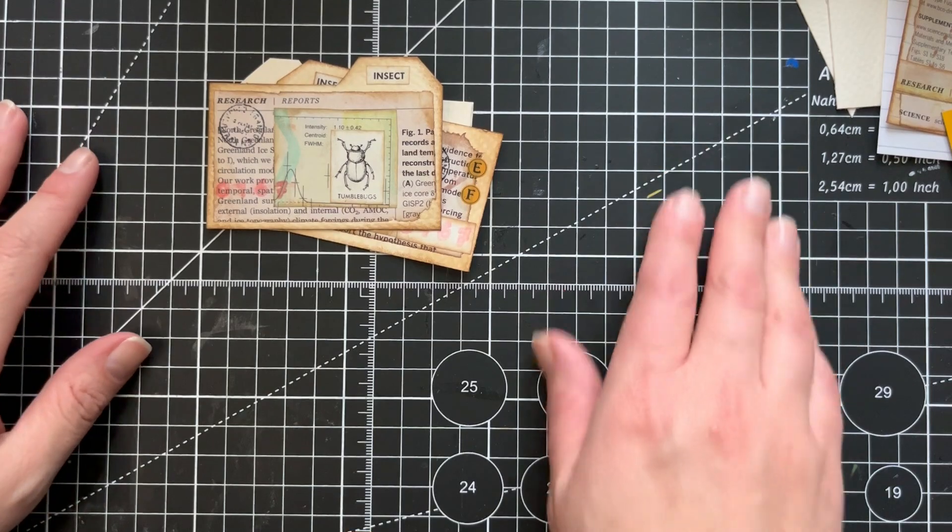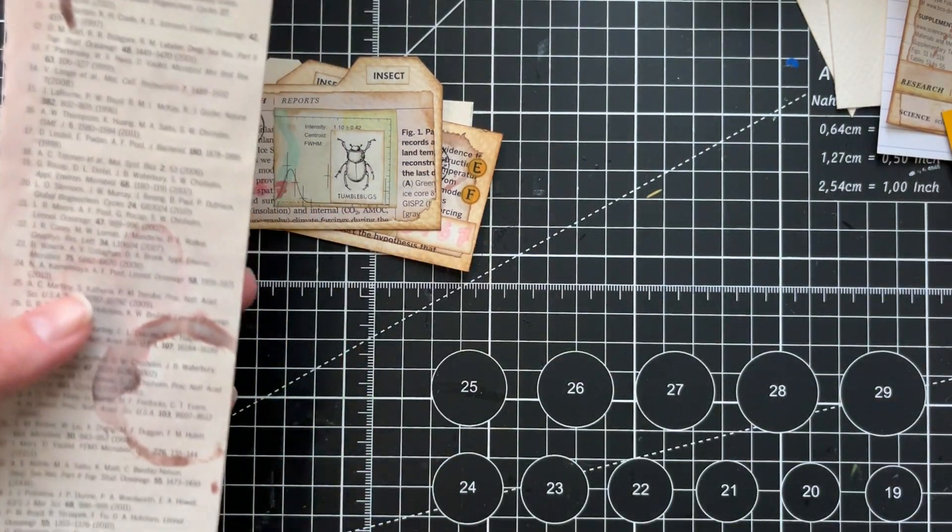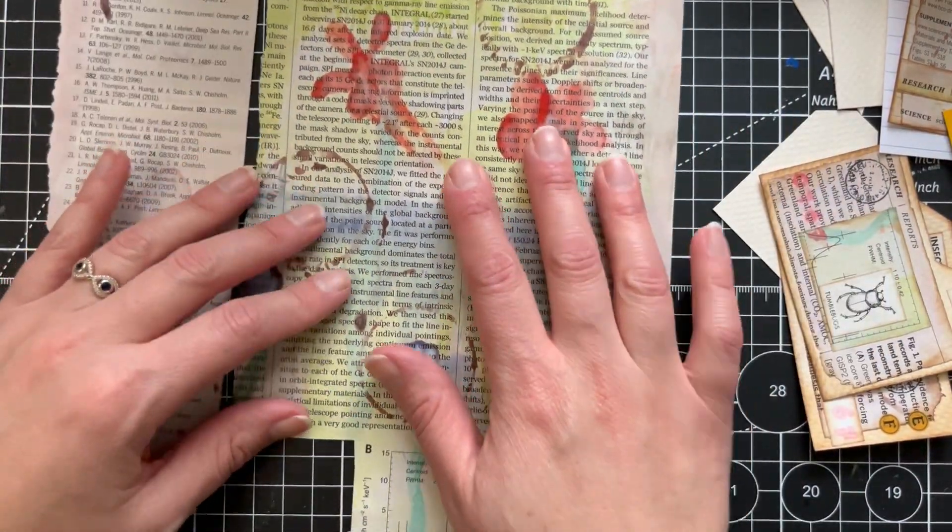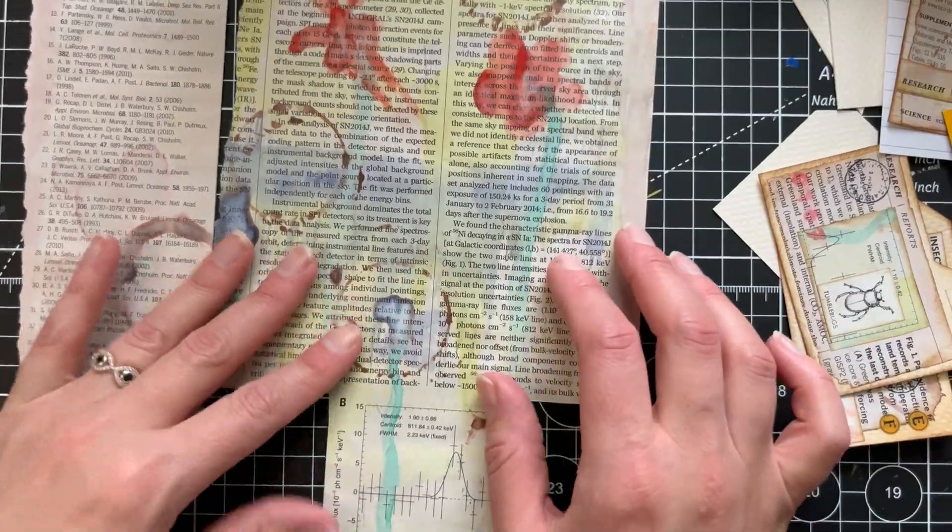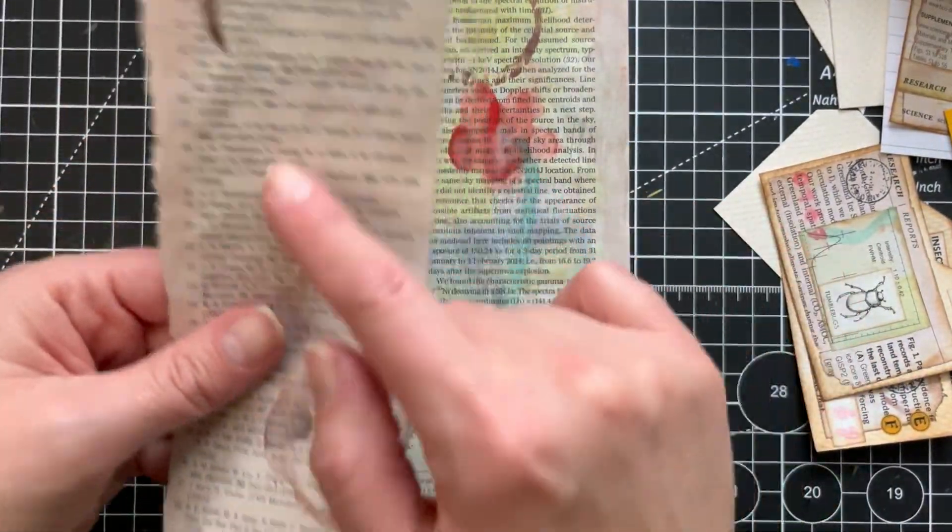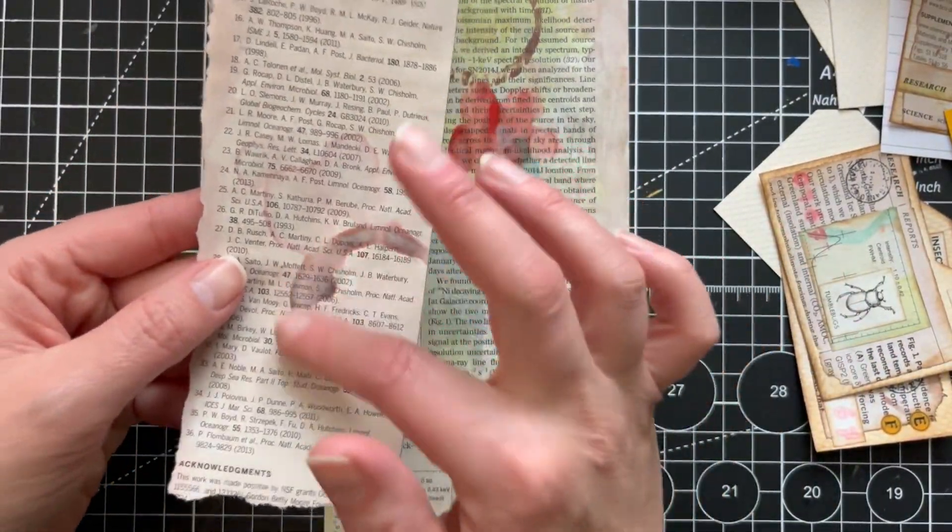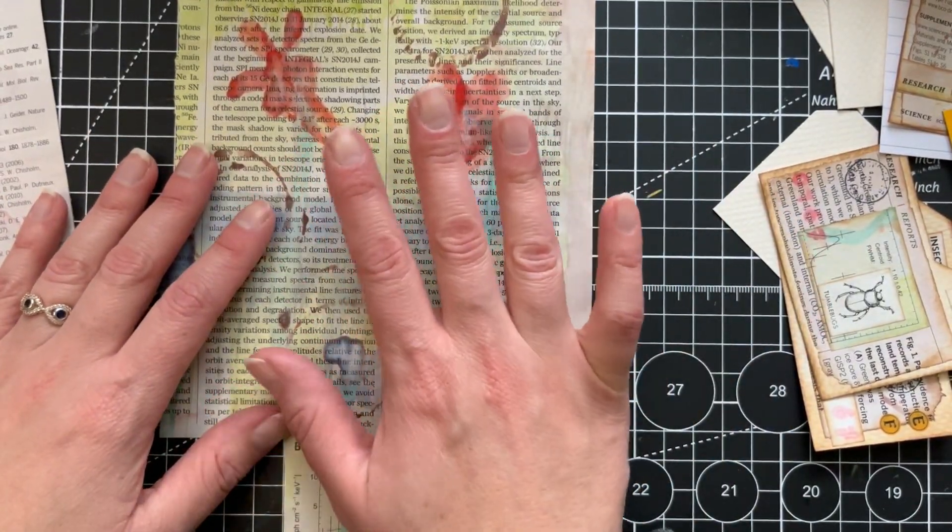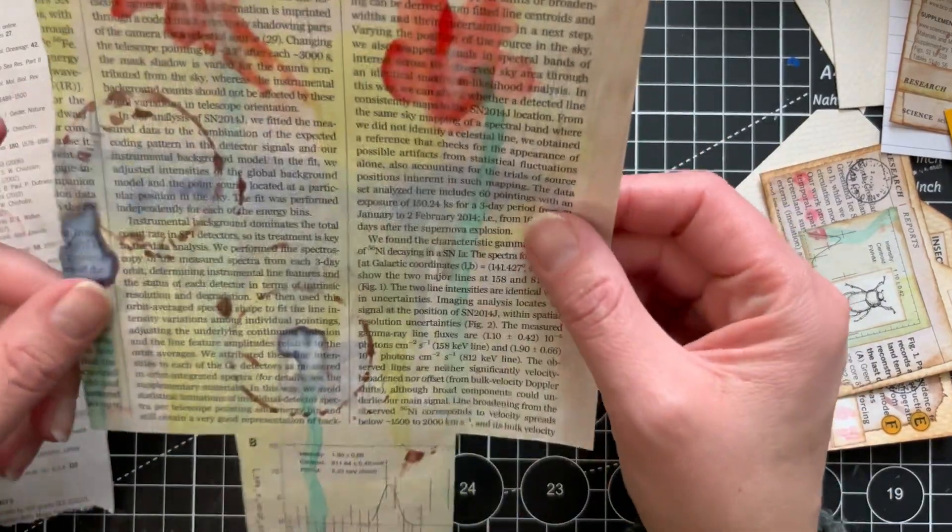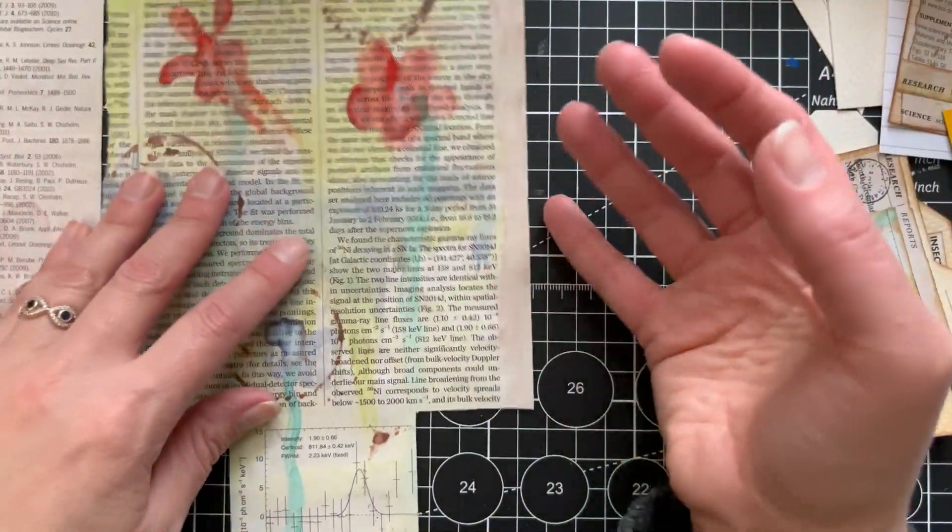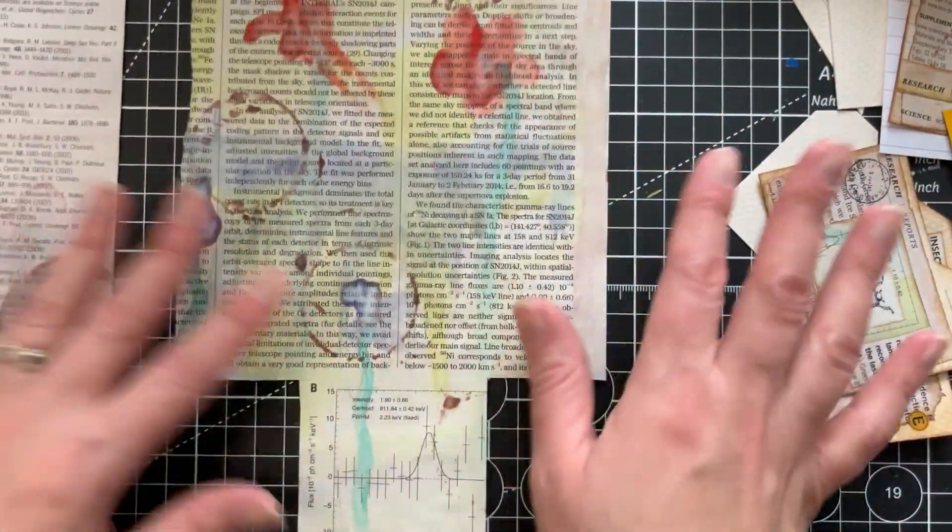And so for the background, I'm going to use these pages. These ones have been painted with watercolors and I really like the effect that they have. I tried to simulate coffee marks on this one. It's really nice. So these are scientific papers from a magazine that were going to be thrown away. So I rescued them and I've been using them for many projects.